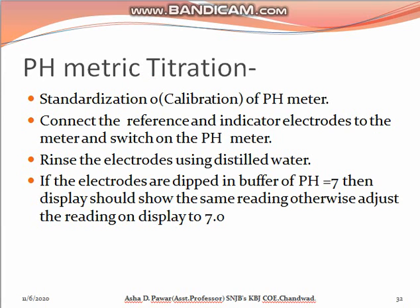So, pH metric titration. During the pH measurement, we use the reference electrode, which is a calomel electrode, and the indicator electrode, which is the H+ ion sensitive glass electrode. The reference electrode is calomel and the indicator electrode is glass, which indicates the H+ ion concentration in the form of pH, that is minus log to the base 10 of H+ ion concentration. During the pH metric titration, we consider strong acid HCl titrated with strong base NaOH.